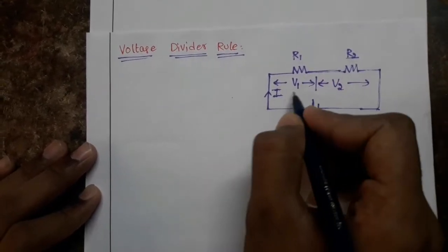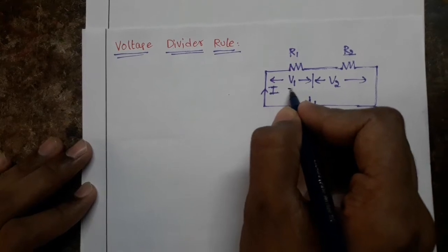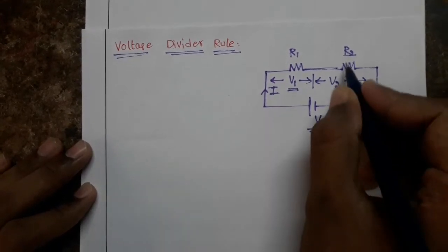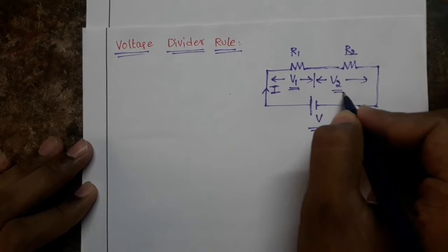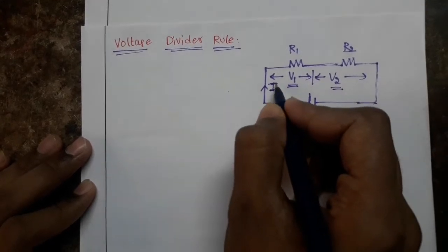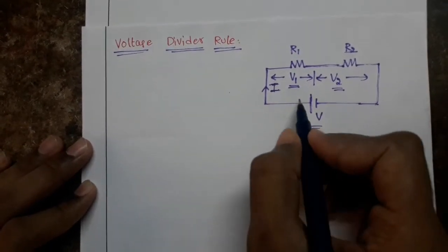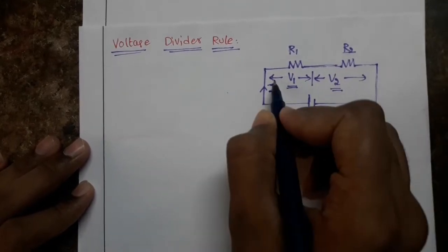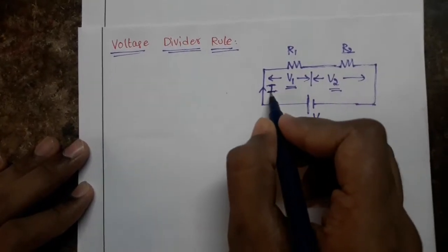For finding the voltage drop across R1 or R2 resistor, we have to find the current first. For finding the voltage across the overall resistance, we also have to find the current.